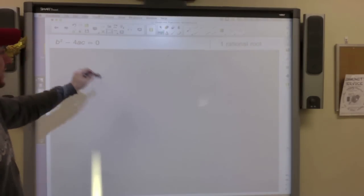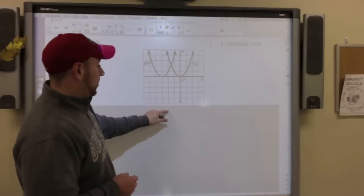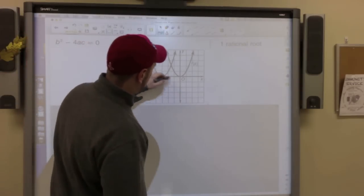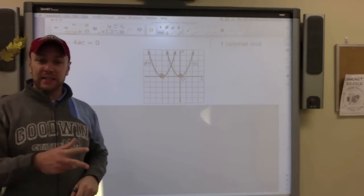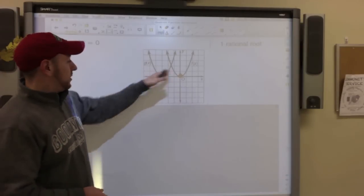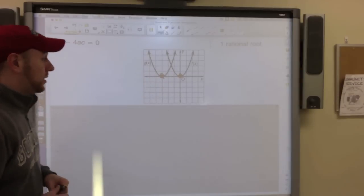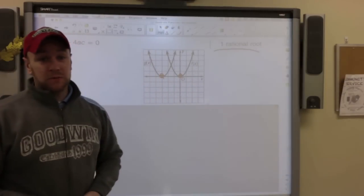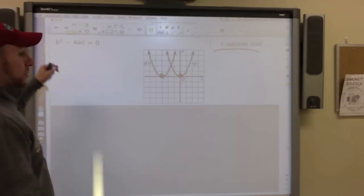The next one is, if b squared minus 4ac equals 0, there's one rational root. What happens is, the parabola kind of moves up, and that vertex is right there, right on the x-axis. So both of these graphs have vertexes right on the x-axis. So that means that has a one rational root. And again, this is just classifying how it does.